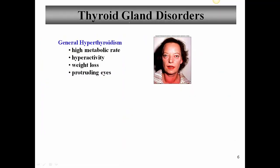We're going to discuss a couple of thyroid gland disorders because they're instructive for thyroid physiology. General hyperthyroidism is a condition of having too much thyroid hormone - too high levels of T3 and T4. Since T3 and T4 increase the metabolic rate throughout the body, this leads to a high metabolic rate, hyperactivity, weight loss, and protruding eyes - you can see an example here. The tissue behind the eyes grows from the increased metabolic rate and pushes the eyes out. You'll also notice a goiter in the neck, which is an enlargement of the thyroid gland. The subject is thin, which is very typical of people with hyperthyroidism.